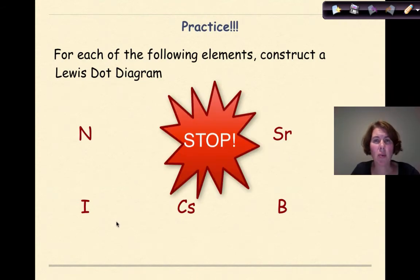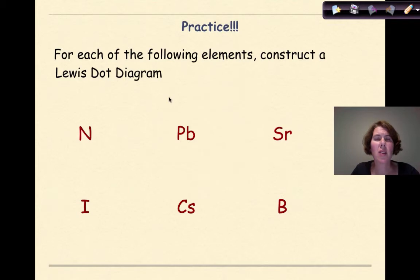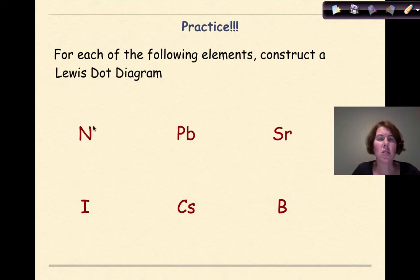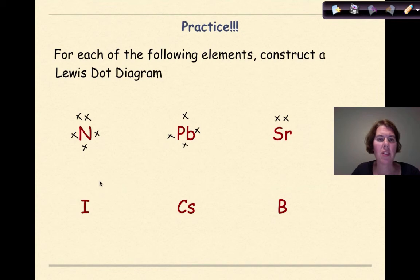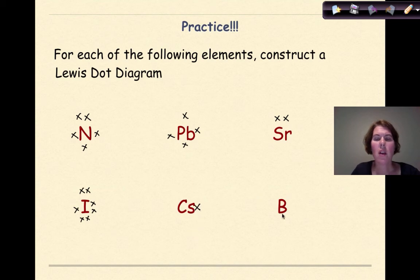Now let's do a little bit of practice. Construct Lewis dot diagrams for each of the following elements. Nitrogen is in group 15 — 5 valence electrons: 1, 2, 3, 4, 5. Lead is in group 14 — 1 on each side: 1, 2, 3, 4. Strontium is in group 2 — 2 valence electrons together. Iodine is in group 17 — 7 valence electrons: 1, 2, 3, 4, 5, 6, 7. Cesium is in group 1 — just 1 electron. Boron is in group 13 — 1, 2, 3.